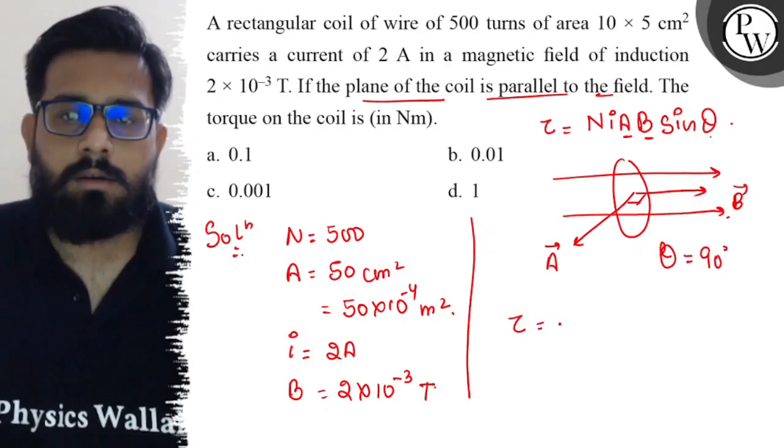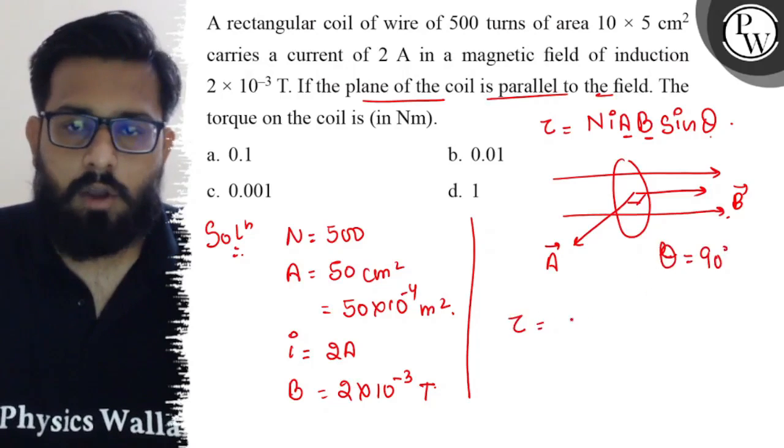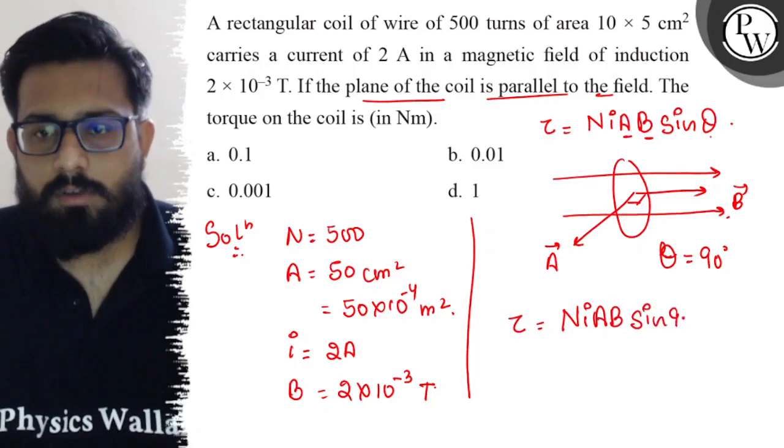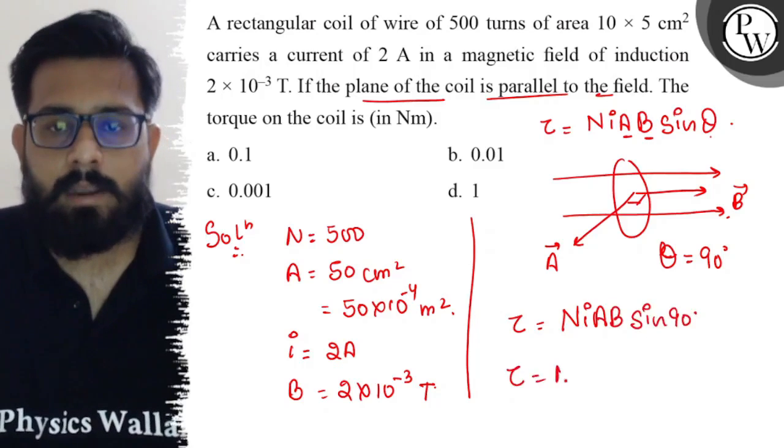For this value of theta, tau can be written as N·I·A·B·sin(90°). Sin(90°) is equal to 1, so tau can be written as N·I·A·B.